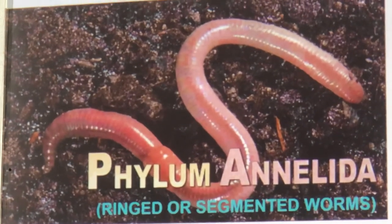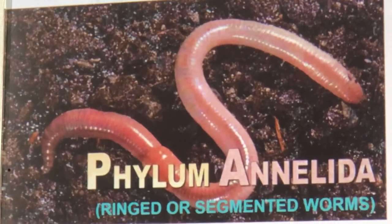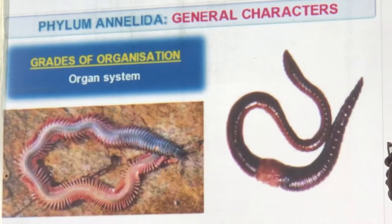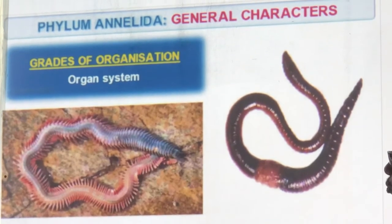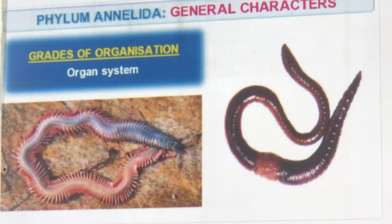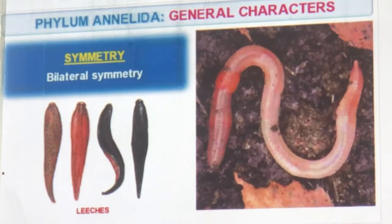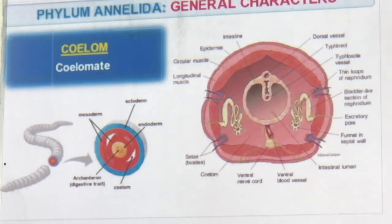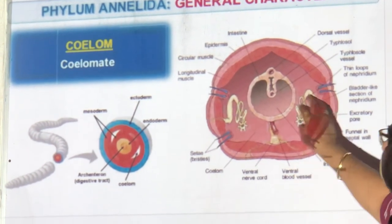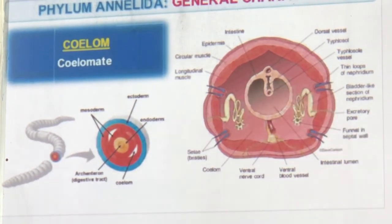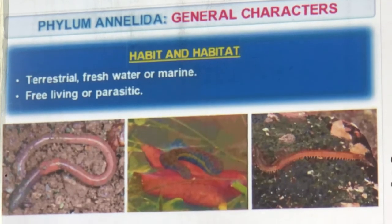Annelida — ringed or segmented worms. Annulus means a ring. You can see beautiful rings on the body. Organ systems are present — circulatory, digestive, and respiratory systems are all there. Bilateral symmetry. They have a true coelom and organs are inside it. They may be terrestrial, freshwater, or marine; free-living or parasitic.